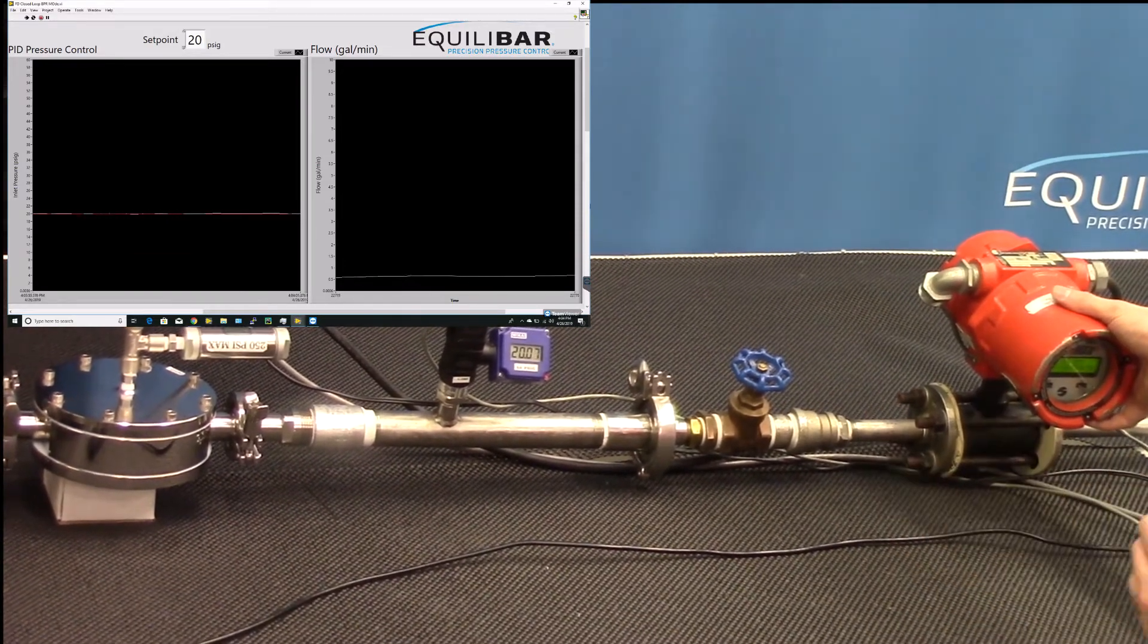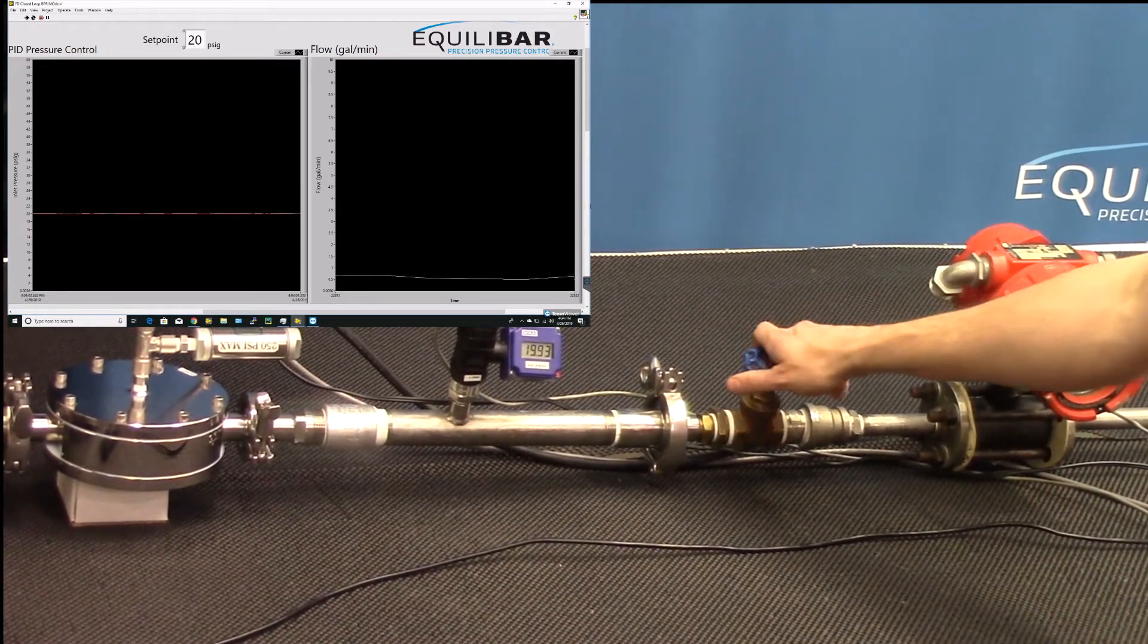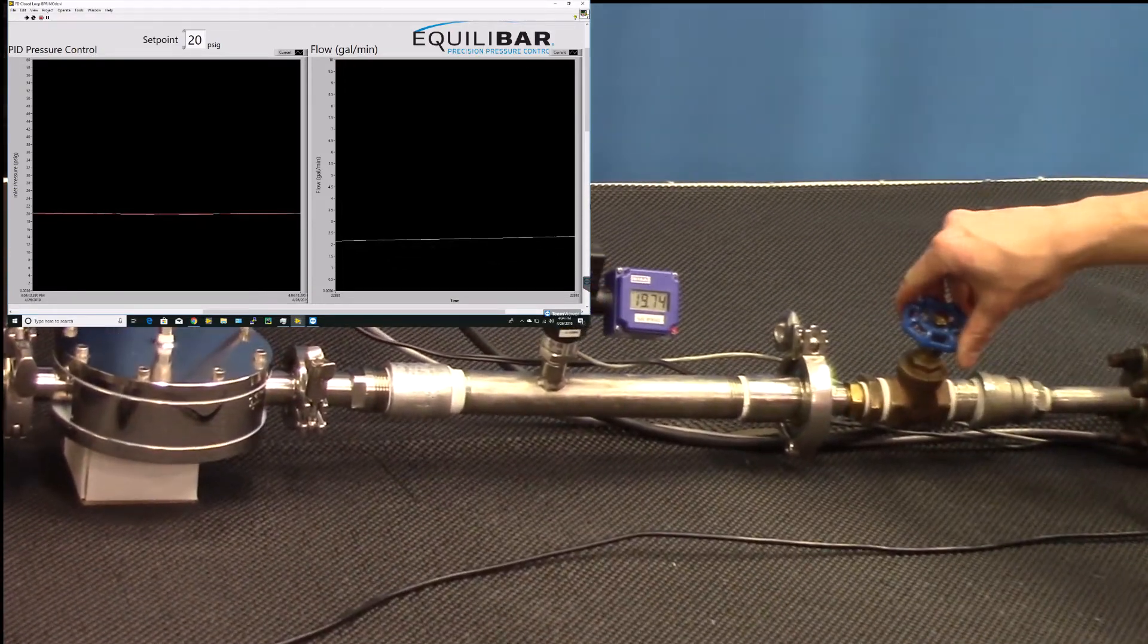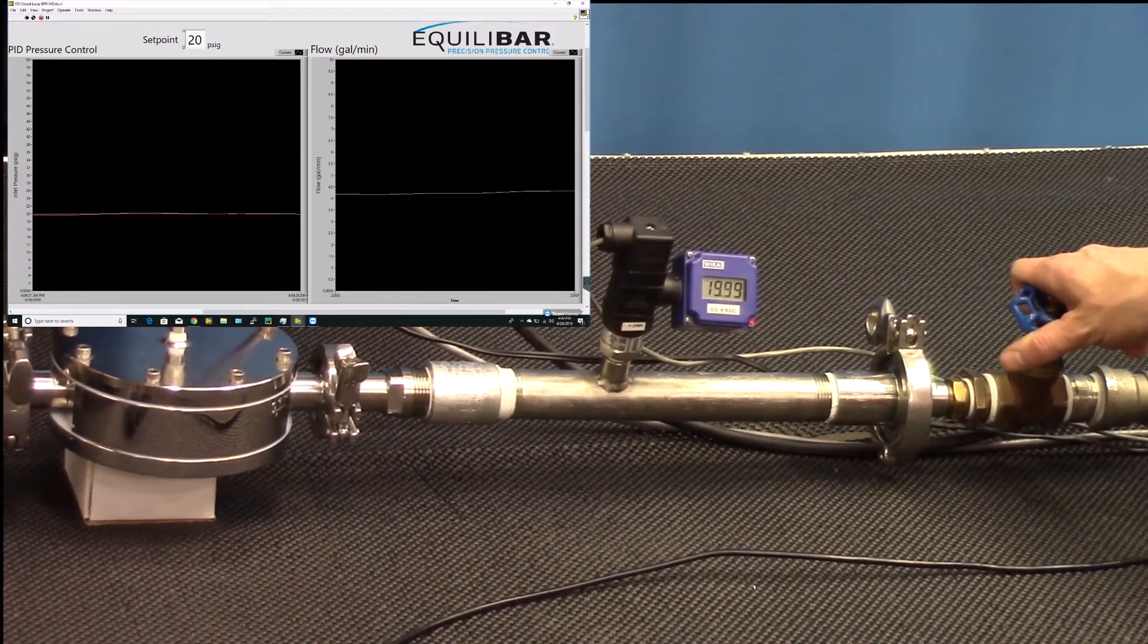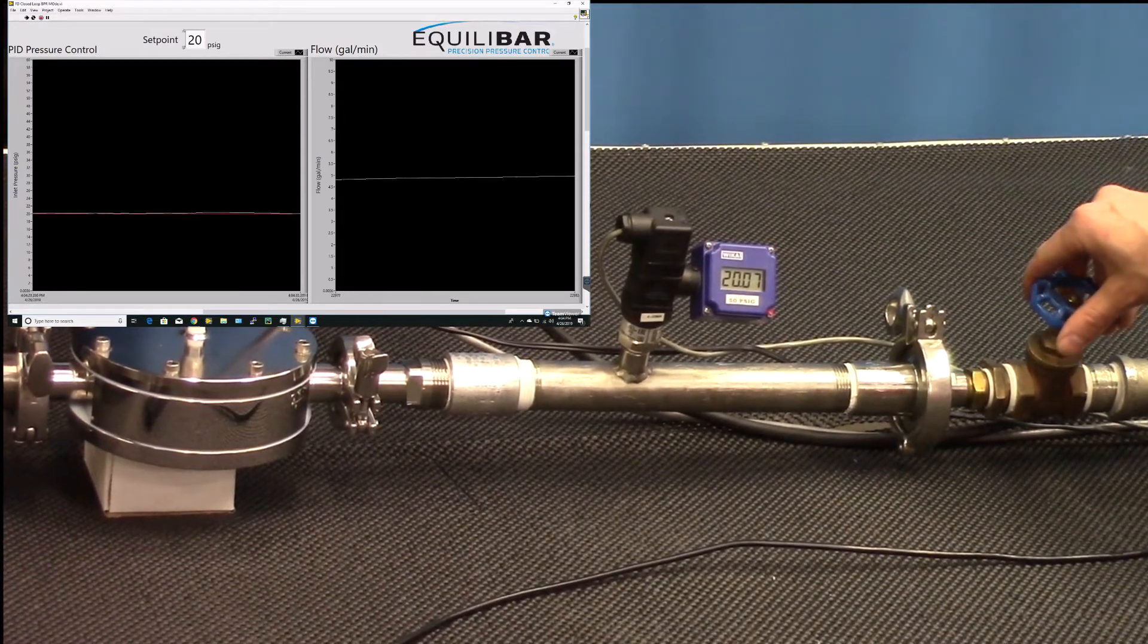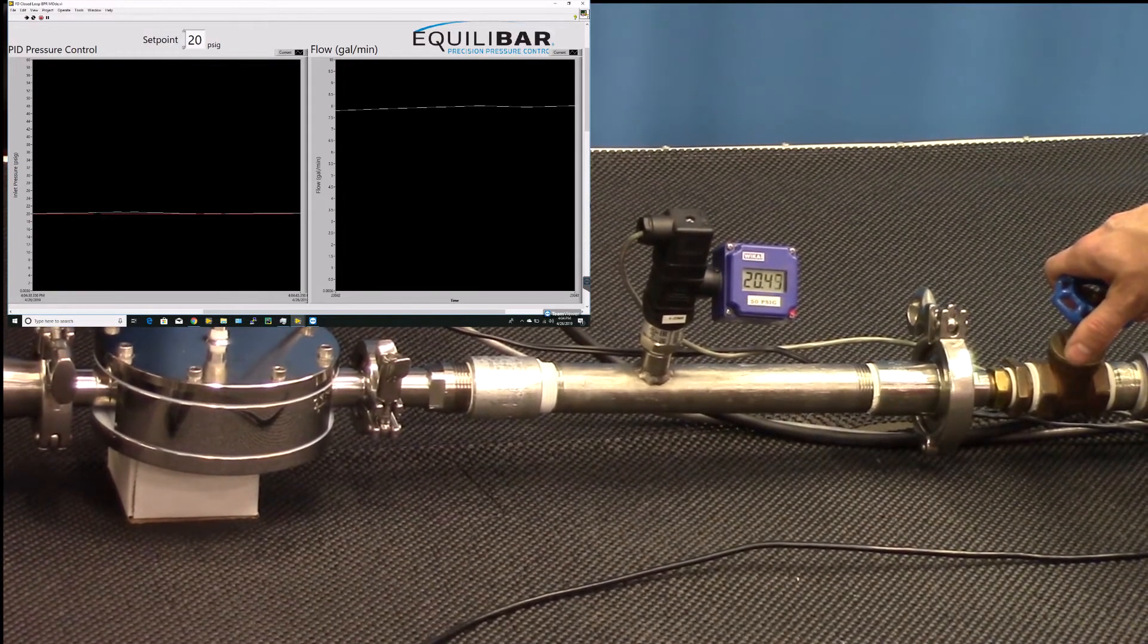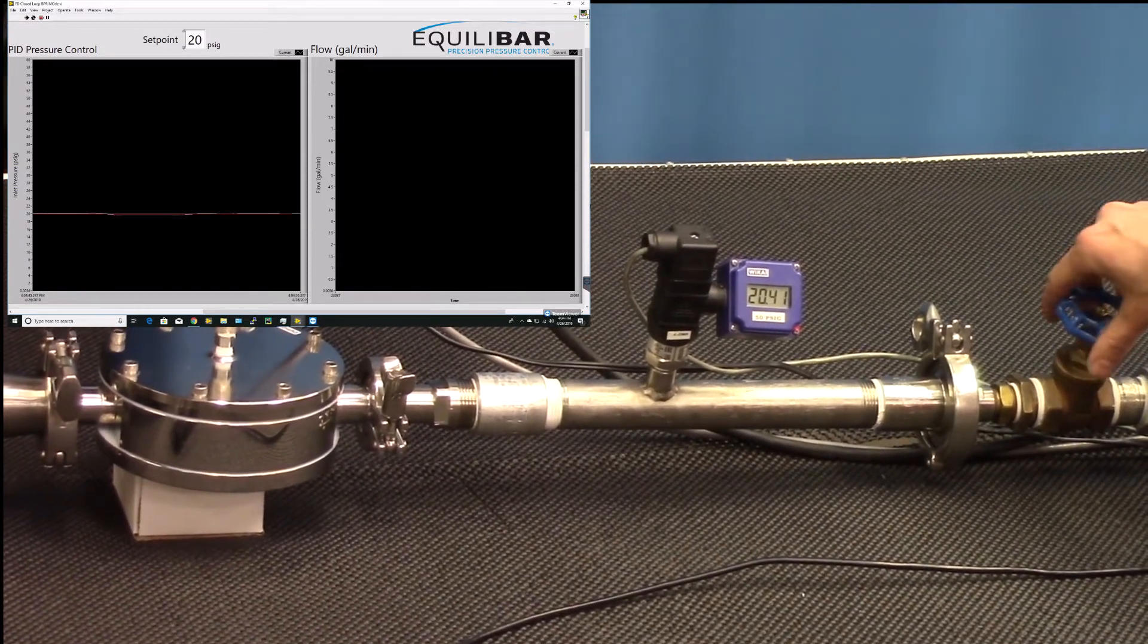We'll begin a little bit below that and go above up to 10 gallons, and again monitor inlet pressure and see what happens. I'm going to slowly increase flow again. We'll see the valve respond, holding pressure stable. Right now we're at five gallons a minute, so halfway through the range.